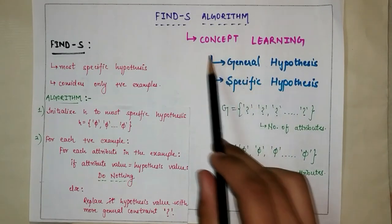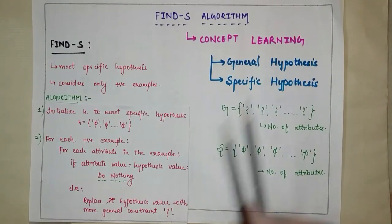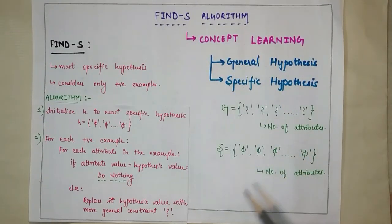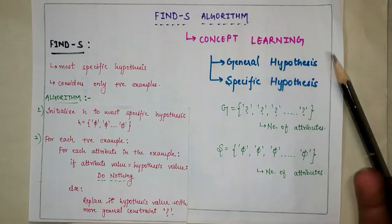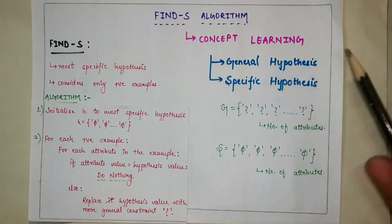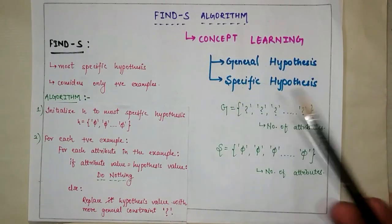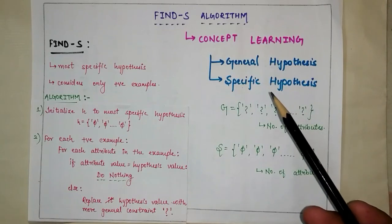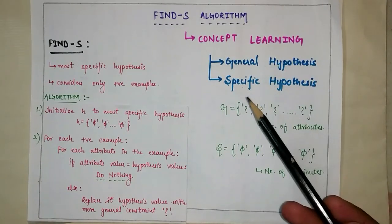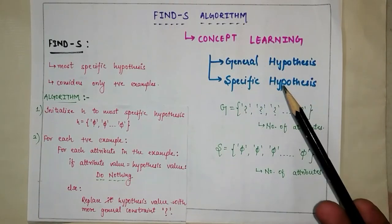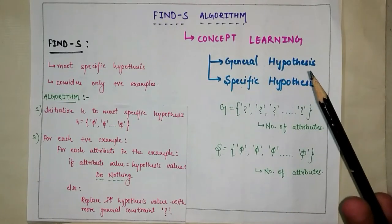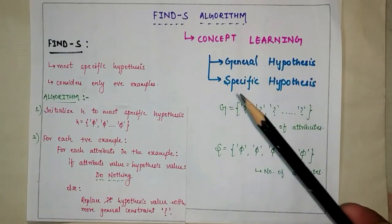The first concept is concept learning. Concept learning is a learning task in which we train our machine to learn some concept by giving some predefined examples. For example, if 'chair' is a concept, then the features that determine it is a chair belong to the concept, else they don't. So it is either yes or no — either a positive example or a negative example.